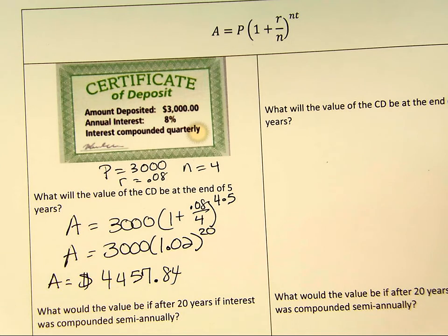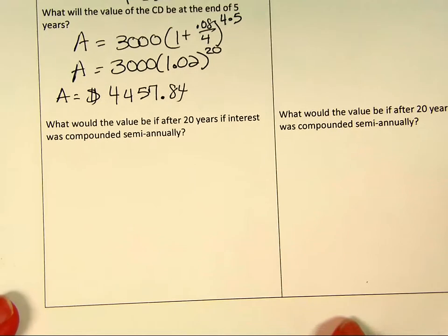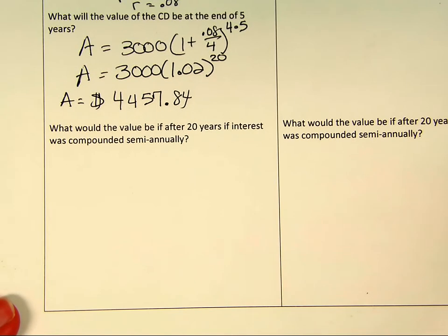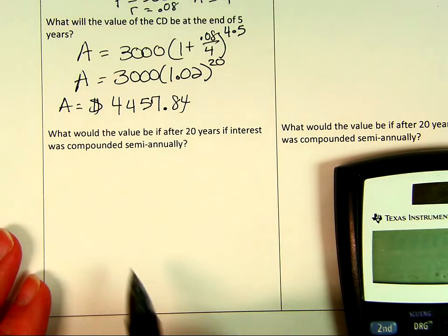Five years at 8% interest, you would have $4,457.84 if you were compounding it quarterly. Now if you compound it more often, you actually get more. It's not tons more, but you get more. If you only do it once a year or twice a year, it's a little bit less. I don't know of any interest rate that's 8% at the current time, but you have to look around.